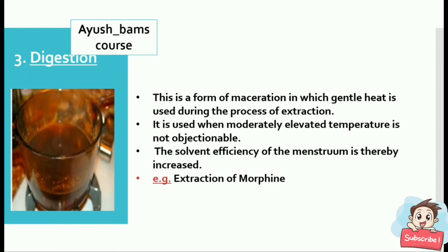The third method is digestion. This is a form of maceration in which gentle heat is used during the process of extraction — very less heat is applied. It is used when a moderately elevated temperature is not objectionable. The solvent efficiency of the menstruum is thereby increased. For example, extraction of morphine.